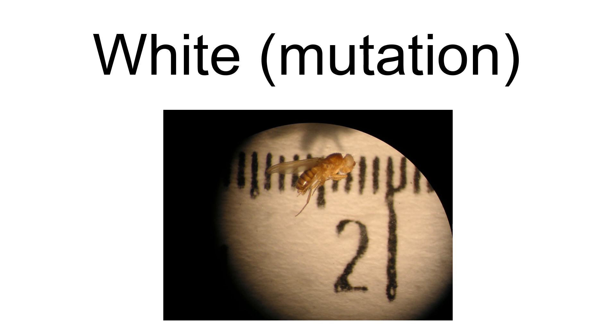In 1910 Thomas Hunt Morgan and Lillian von Morgan collected a single male white-eyed mutant from a population of Drosophila melanogaster fruit flies, which usually have dark brick red compound eyes.